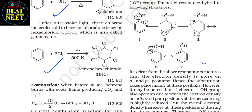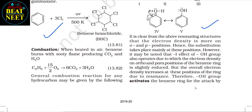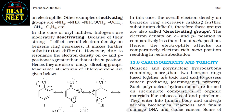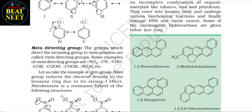As an example, consider the directive influence of the phenolic –OH group. Phenol is a resonance hybrid of several structures; from the resonating structures it is clear that electron density is greater at ortho and para positions, hence substitution takes place mainly there. The –I effect of the –OH group slightly reduces electron density, but the overall electron density at ortho and para positions increases due to resonance; therefore –OH activates the benzene ring towards electrophilic attack. Other activating ortho-para directing groups include –NH₂, –NHR, –NHCOCH₃, –OCH₃, –CH₃, –C₂H₅, etc. In aryl halides, halogens are moderately deactivating due to their strong –I effect, but due to resonance they are still ortho-para directing.